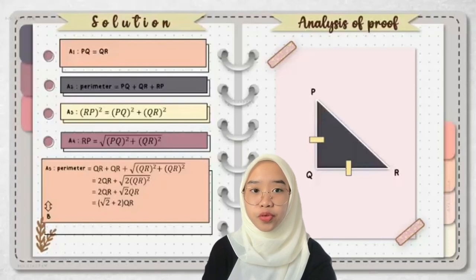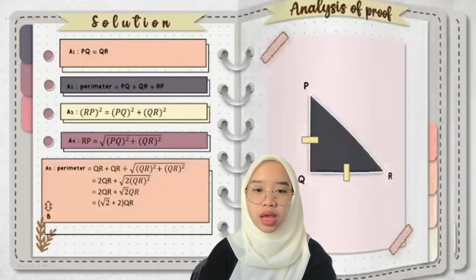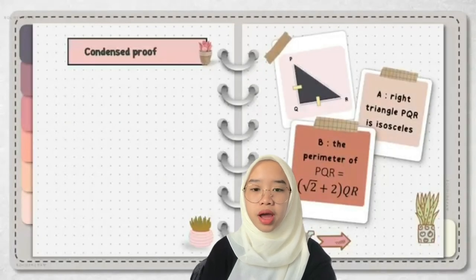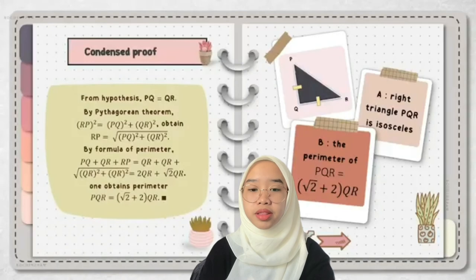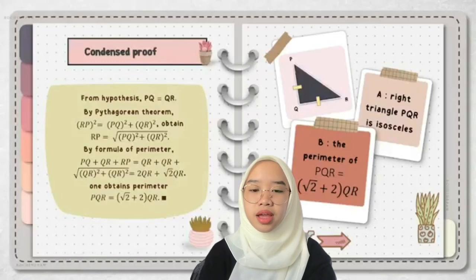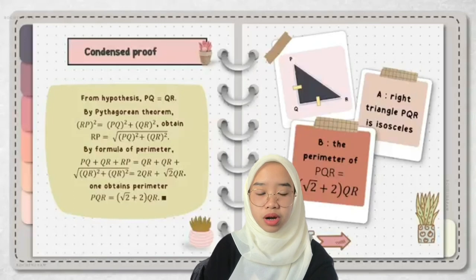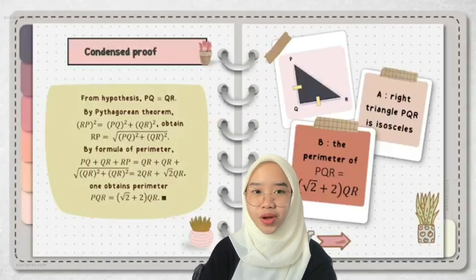We finally prove that A5 is equivalent to B. After completing the analysis of proof, we do the condensed proof, which explains our steps in sentences. From the hypothesis, PQ equals QR. By the Pythagorean theorem, RP squared equals PQ squared plus QR squared, obtaining RP equals root of PQ squared plus QR squared. By the formula of perimeter, PQ plus QR plus RP equals root of PQ squared plus QR squared. Then we obtain perimeter of PQR equals root 2 plus 2 times QR. We have reached the conclusion. That's all from me, thank you.